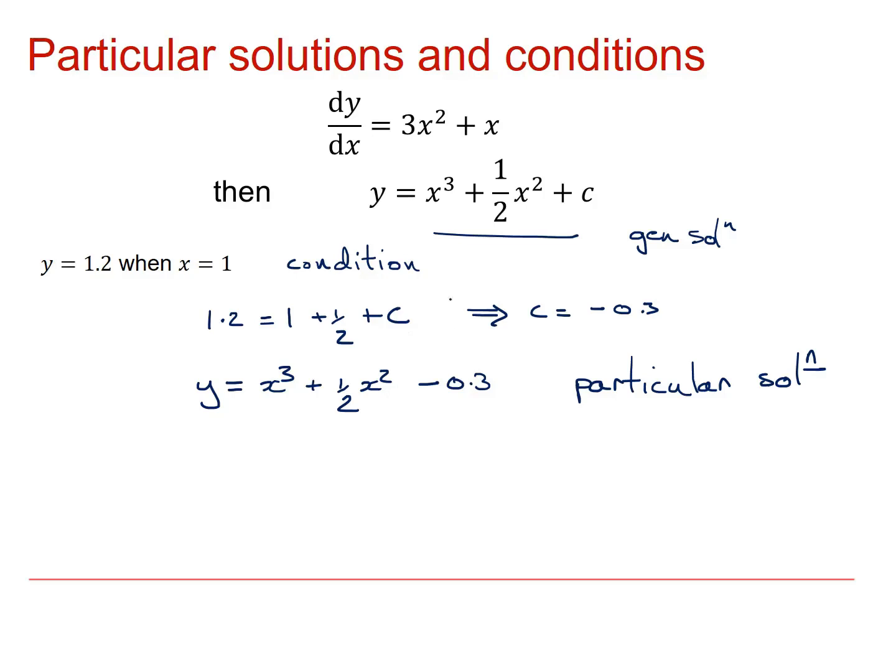If we have more than one constant, then we would need more than one set of conditions to be able to sort out all of the constants. As you'll see in a later video, the constant of integration isn't always just a plus c. It may affect the general solution in a different way.